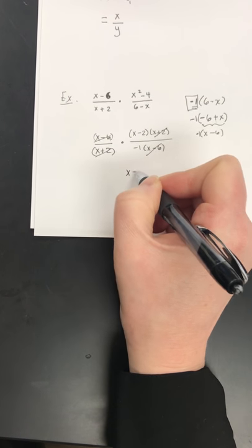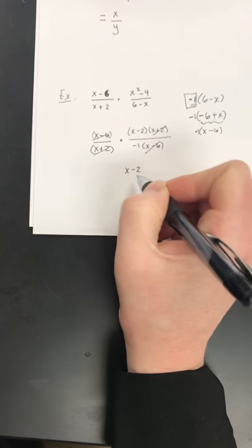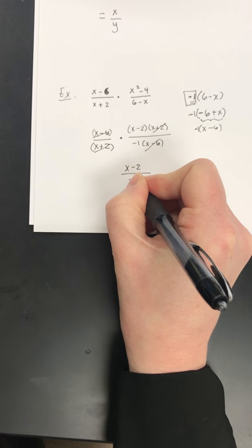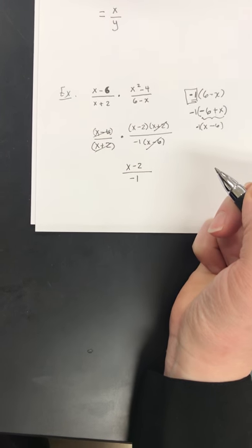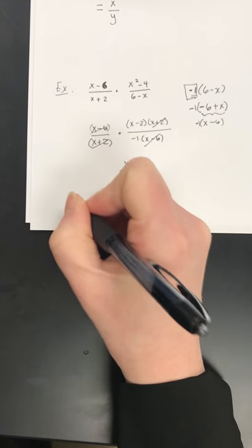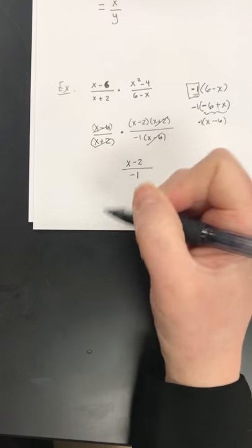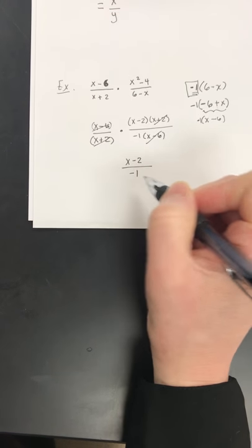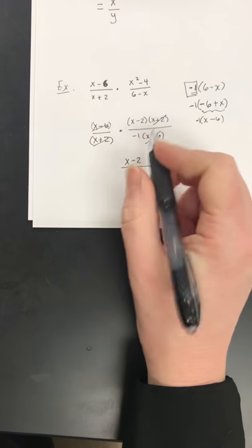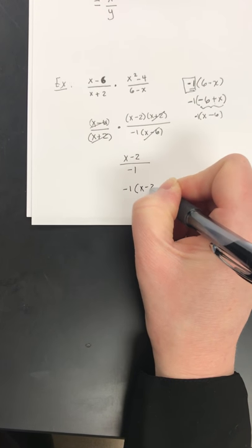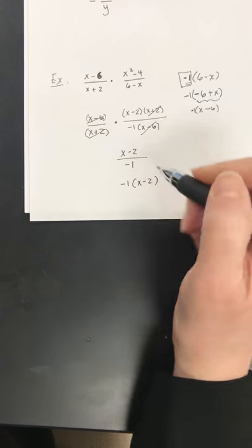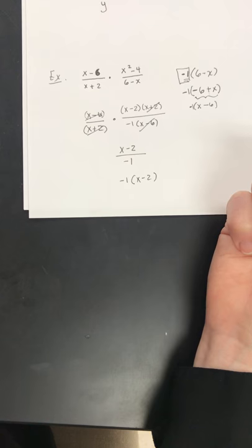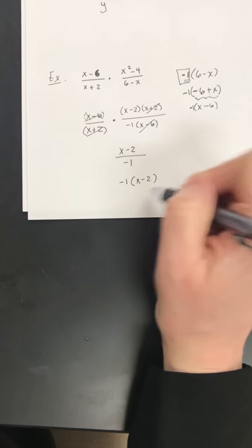That leaves me with x minus 2 times 1, so just x minus 2. And in my denominator, I have negative 1. Now, if you had a number, if you had like 2 over 1, you wouldn't write over 1. Usually you would just write it as 2. Same thing, if we have a negative 1 in the denominator, what I'm going to do is I'm just going to rewrite this as negative 1 times x minus 2 in the numerator, and then that just brings this to the top. And it's equivalent, and that would be my final answer.